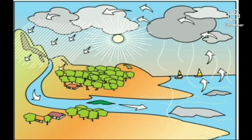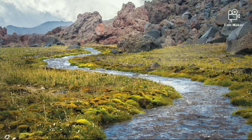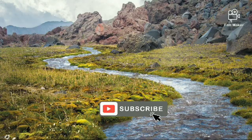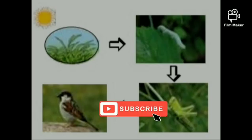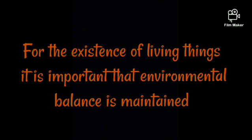There are several other such cycles in nature. There is interaction amongst living things and between living and non-living things, and these interactions go on continuously. This helps to maintain the food chains in the environment. When the various cycles in the environment go on uninterrupted, environmental balance gets maintained. For the existence of living things, it is important that environmental balance is maintained.